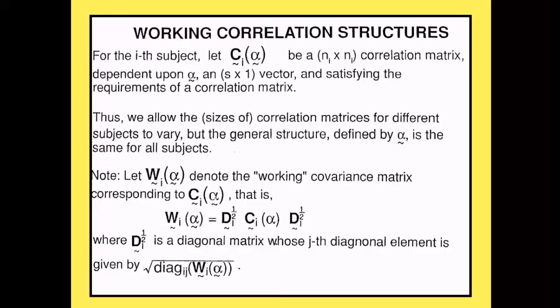There's also an arbitrary numerical specification option, where you can actually specify a correlation structure with specific numerical values — for example, specifying exchangeable with value 0.5, or an autoregressive structure with rho=0.5 so the correlations are 0.5, 0.25, 0.125, and so on. This is useful when you have a more complicated or mixed correlation structure. If you're worried the specified structure is wrong, you can always use empirical standard errors to correct for a potentially misspecified correlation structure.